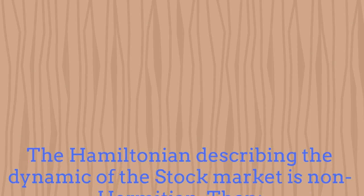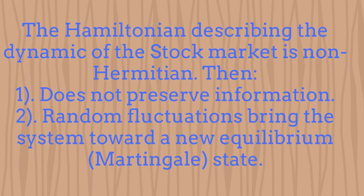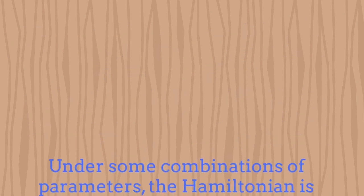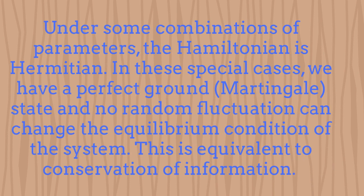In summary, when we analyze the stock market, the Hamiltonian is in general non-Hermitian. This means that the information is not preserved, and that random fluctuations bring the system toward a new ground state or martingale state. For these situations, the symmetry under changes of prices is spontaneously broken. For the Merton-Garman case, it is also true that the symmetry under changes of volatility is spontaneously broken. In this way, we have a natural connection between spontaneous symmetry breaking and flow of information. For some combination of parameters, the Hamiltonians become Hermitian, the information is conserved, and we have a perfect ground state or martingale state which is not affected by random fluctuations.